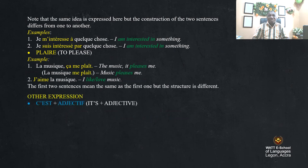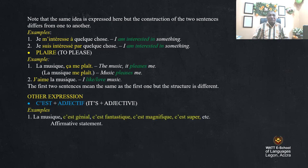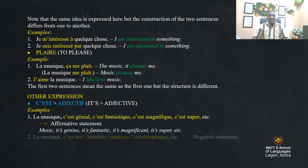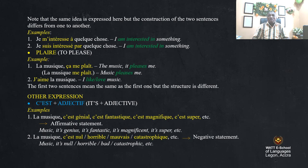Other expression: 'c'est' plus adjective — it's plus adjective. Example: 'La musique, c'est génial' — it's great. 'C'est fantastique' — it's fantastic. 'C'est magnifique' — it's magnificent. 'C'est super' — it's super. And for negative: 'La musique, c'est nul' — it's worthless. 'Horrible' — horrible. 'Mauvais' — bad. 'Catastrophique' — catastrophic.